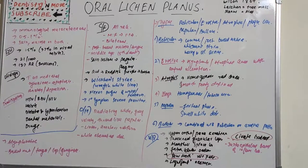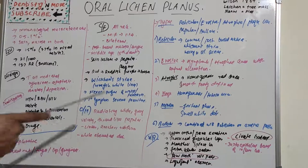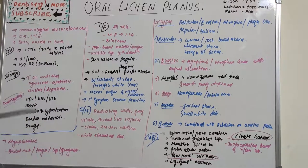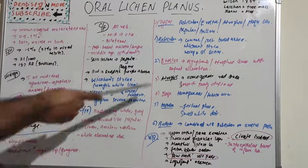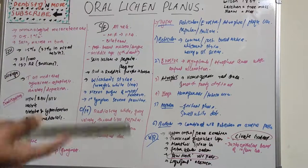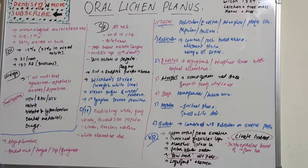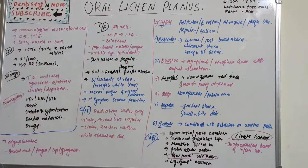The atrophic type is characterized by a homogeneous red, smooth, poorly defined erythematous area with or without peripheral striae. Symptoms include pain and burning sensation, with keratotic changes combined with mucosal erythema. When atrophic oral lichen planus is present on the buccal mucosa or palate, peripheral striae will be present. Striae are very common in the reticular pattern — this is key to its name.